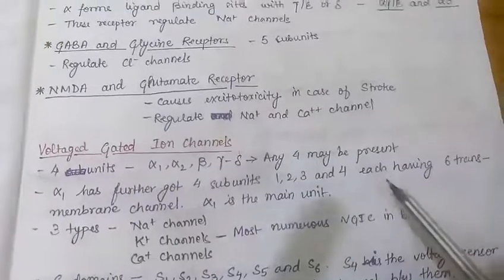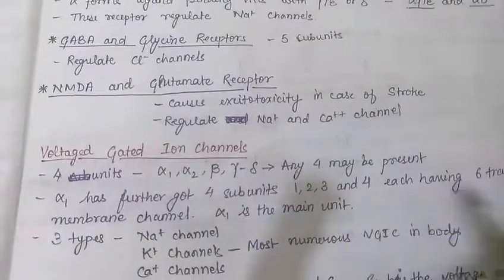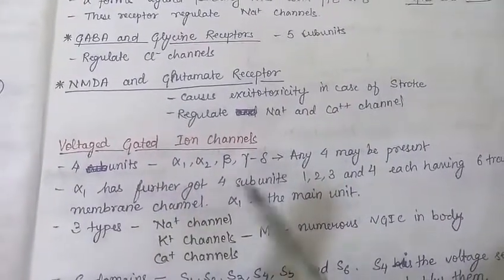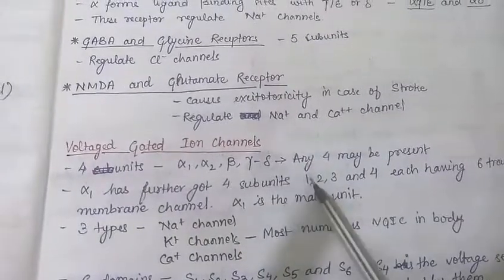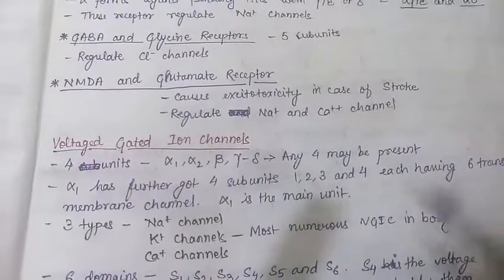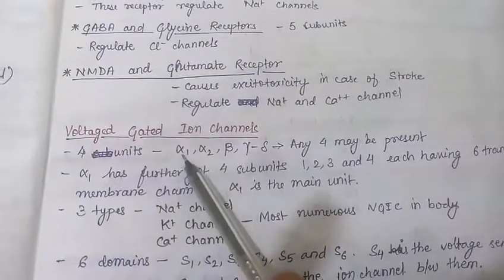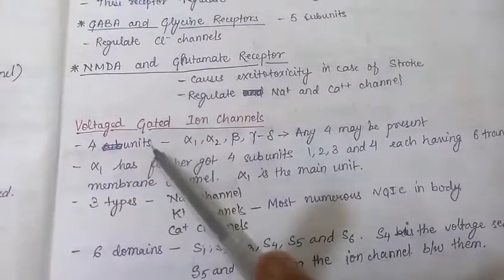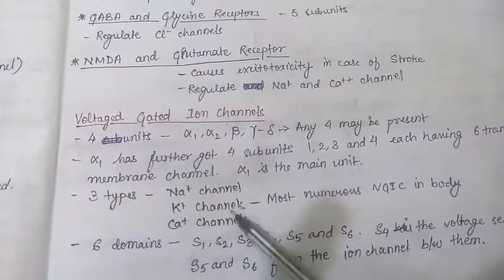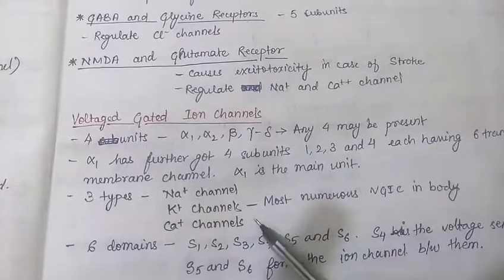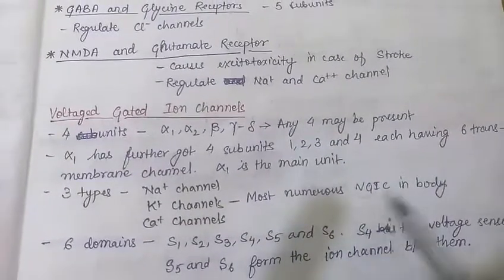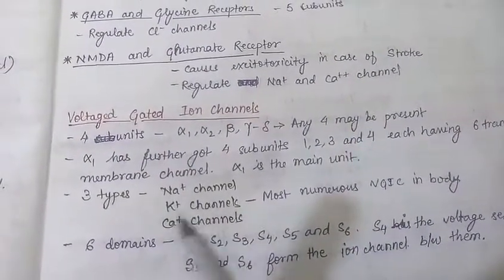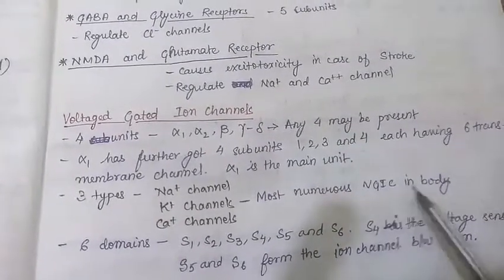The alpha-1 subunit has further four sub-units — numbered 1, 2, 3, and 4 — each having six transmembrane domains. Alpha-1 is the main unit. There are three types of voltage-gated ion channels: sodium channel, potassium channel, and calcium channel.